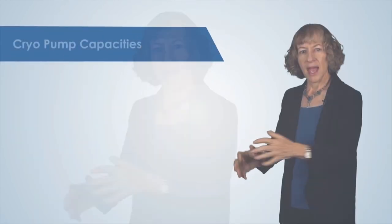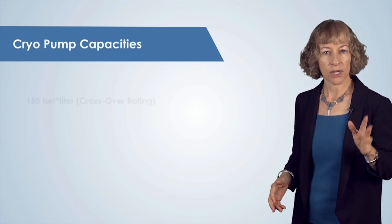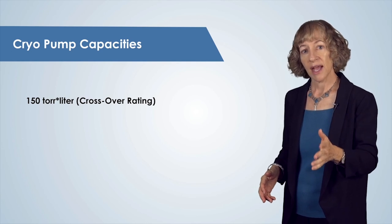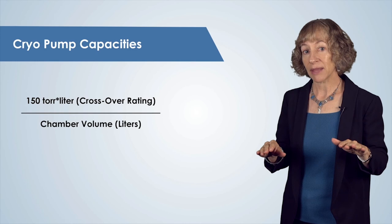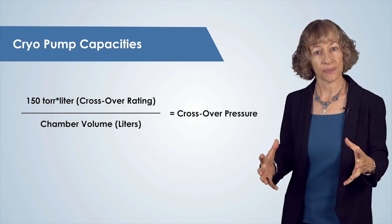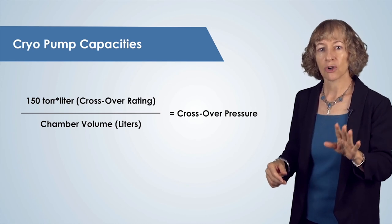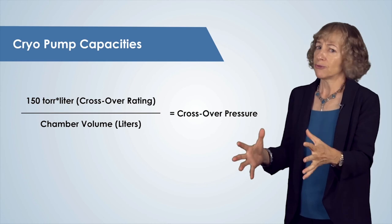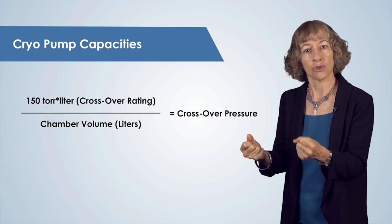Once this process is complete, the cryo pump is as good as new and ready to pump efficiently again. One characteristic of cryo pumps is the crossover pressure, or the pressure at which the user changes from a mechanical rough pump to the cryo pump. As an example, if a cryo pump has a 150 torr-liter crossover rating, then we take that crossover rating and divide by the chamber volume to calculate the crossover pressure. That's the maximum pressure for crossover from the mechanical pump to the cryo pump, or you'll be freezing too many air molecules and you'll have to regenerate too quickly. Cryo pumps are one high vacuum pump option. Be sure also to take a look at the turbo pump video to learn about another commonly used high vacuum pump.